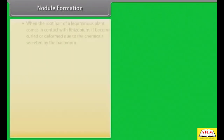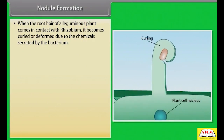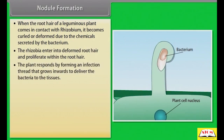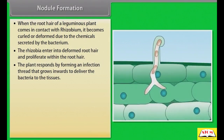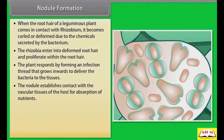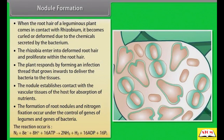Nodule formation: when the root hair of a leguminous plant comes in contact with Rhizobium, it becomes curled or deformed due to the chemicals secreted by the bacteria. The Rhizobia enter into the deformed root hair and proliferate within it. The plant responds by forming an infection thread that grows inwards to deliver the bacteria to the tissues. The nodule establishes contact with the vascular tissues of the host for absorption of nutrients. The reaction is: N2 + 8e⁻ + 8H⁺ + 16ATP → 2NH3 + H2 + 16ADP + 16Pi.